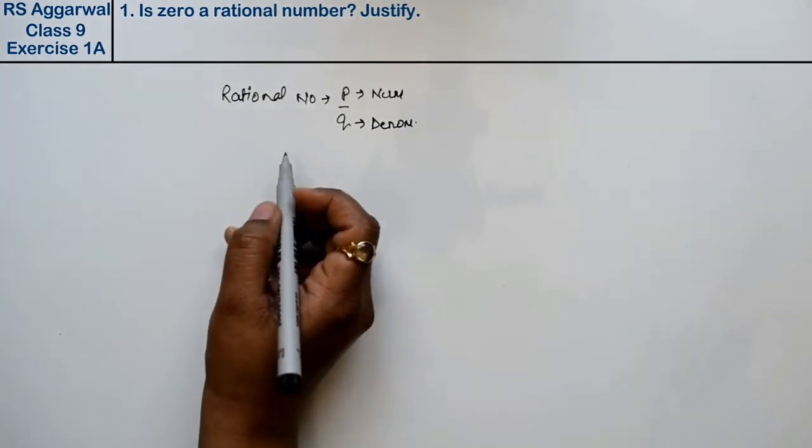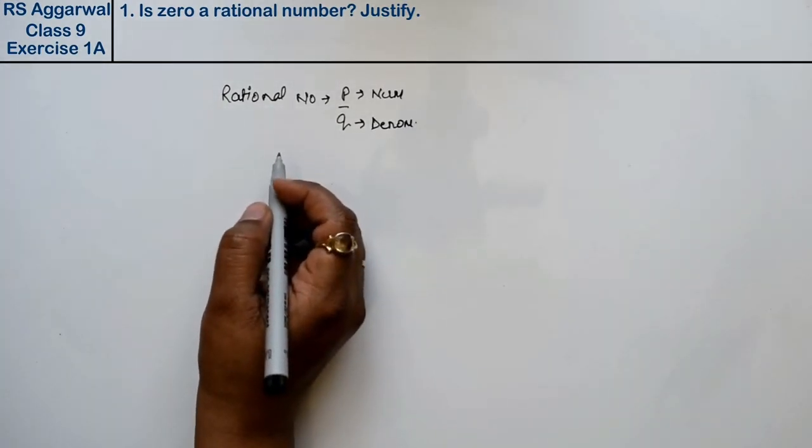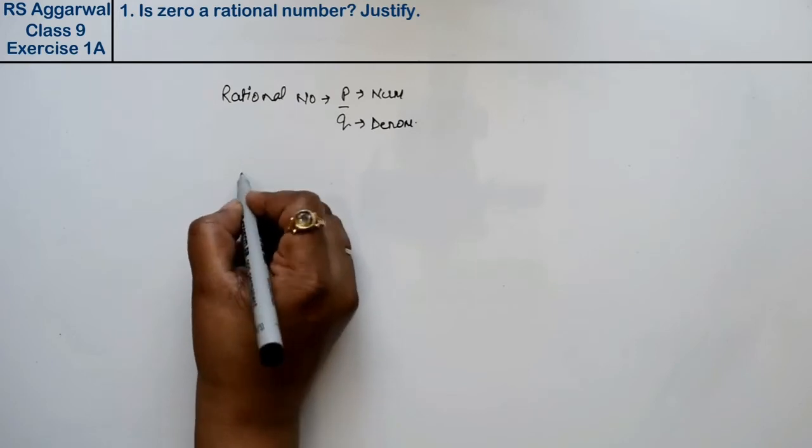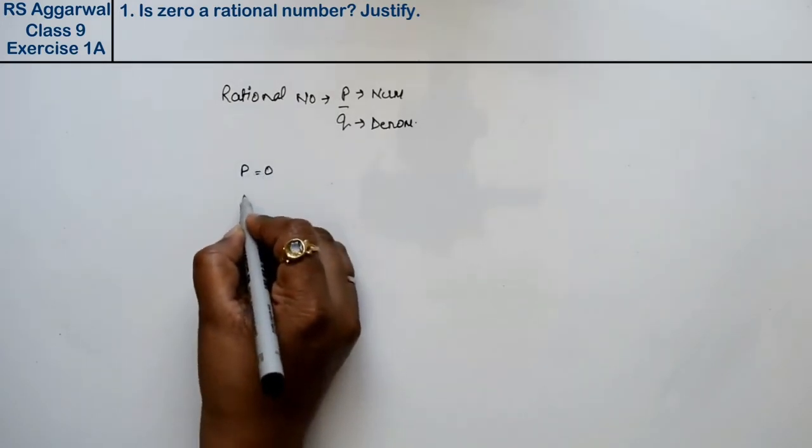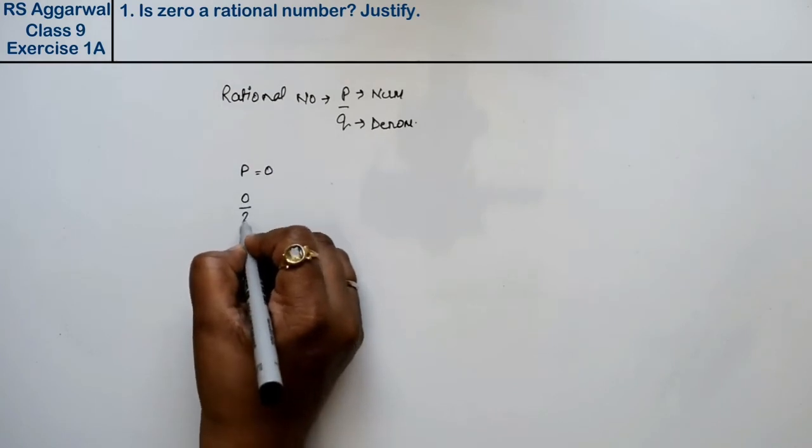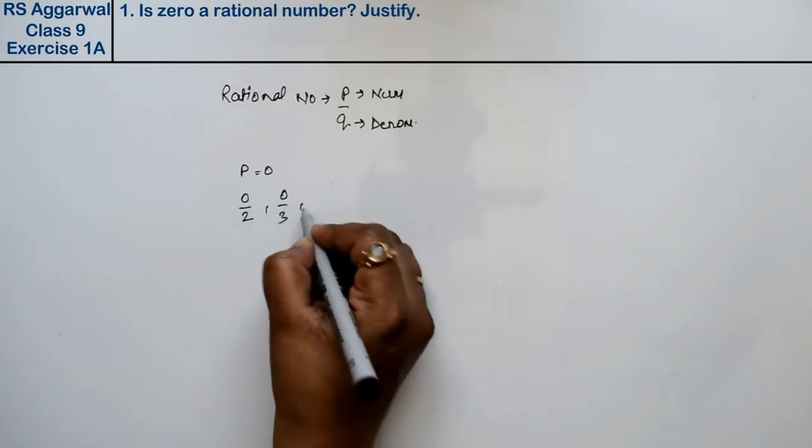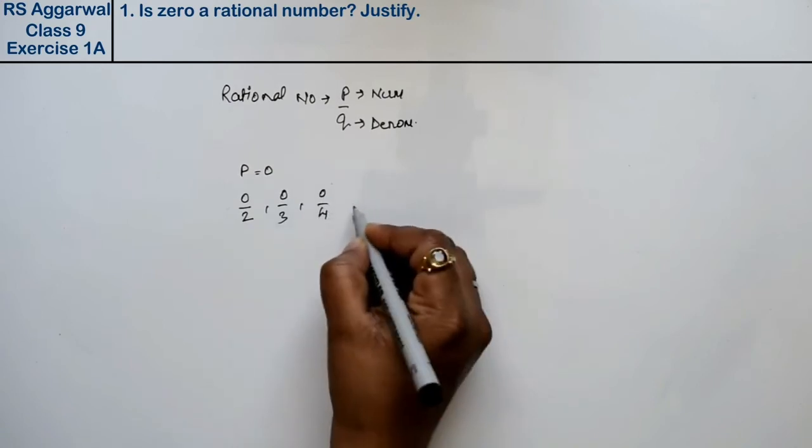Now, is zero a rational number or not? In which case can it be? If p is zero, then we can take values like 0/2, 0/3, 0/4 and so on. Any values can be taken. The answer will always be zero, right friends.